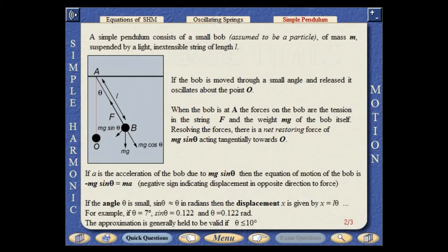A simple pendulum consists of a small bob of mass M, suspended from a fixed point by a light, inextensible string of length L. If the bob is moved through a small angle and released, it oscillates about the point O.